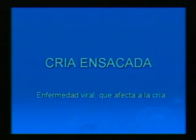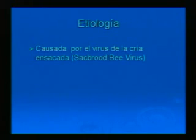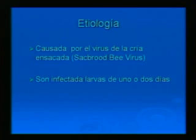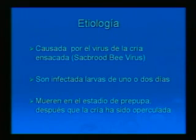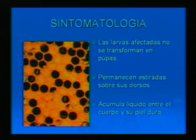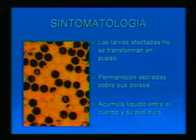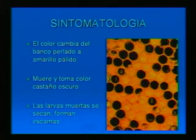Ahora pasamos a ver otra enfermedad que es cría ensacada, también muy común en los apiarios. Es una enfermedad viral que afecta a la cría, causada por el virus de la cría ensacada. Son infectadas larvas de uno o dos días y mueren en el estadio de prepupa después de que la cría ha sido operculada. Las larvas afectadas no se transforman en pupa, permanecen estiradas sobre sus dorsos y acumulan líquido entre el cuerpo y la piel. El color cambia del blanco perlado al amarillo pálido, mueren y toman el color castaño oscuro, y las larvas muertas se secan y forman escamas.